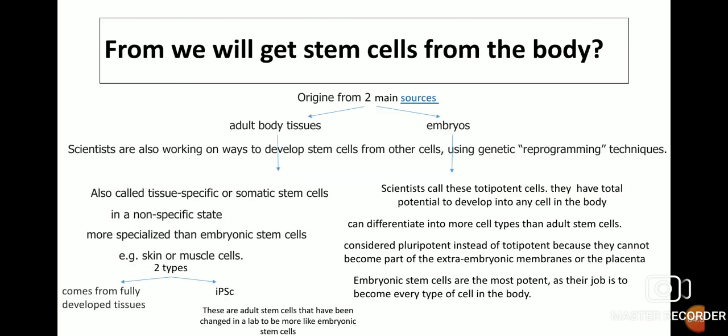There are two main sources from which we get stem cells: adult body tissue and embryos. Scientists are also working on ways to develop stem cells from other cells using genetic reprogramming techniques. Adult body tissue stem cells — also called tissue-specific or somatic stem cells — exist in a non-specific state in tissues and are more specialized than embryonic stem cells, for example skin or muscle cells. One type comes from fully developed tissues; another is induced pluripotent stem cells, which are adult stem cells changed in a lab to be more like embryonic stem cells.